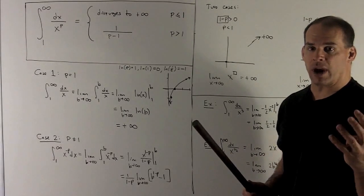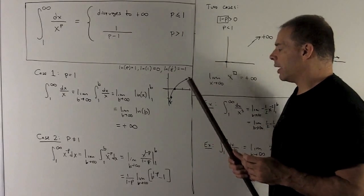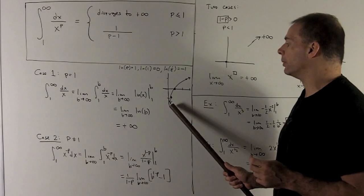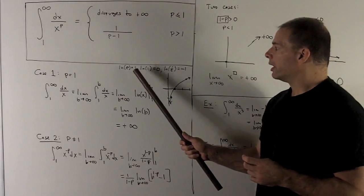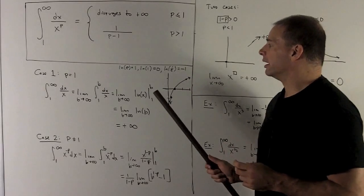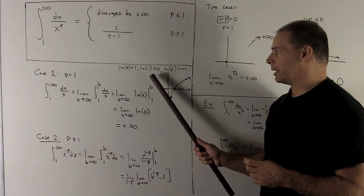Recall, we need four things to graph natural log of x. We'll need three points and we'll need to know that there's a vertical asymptote at 0, at x equals 0. So three points I want are going to be e, 1, and 1 over e. Natural log of e is going to be equal to 1. Natural log of 1 is going to be equal to 0.